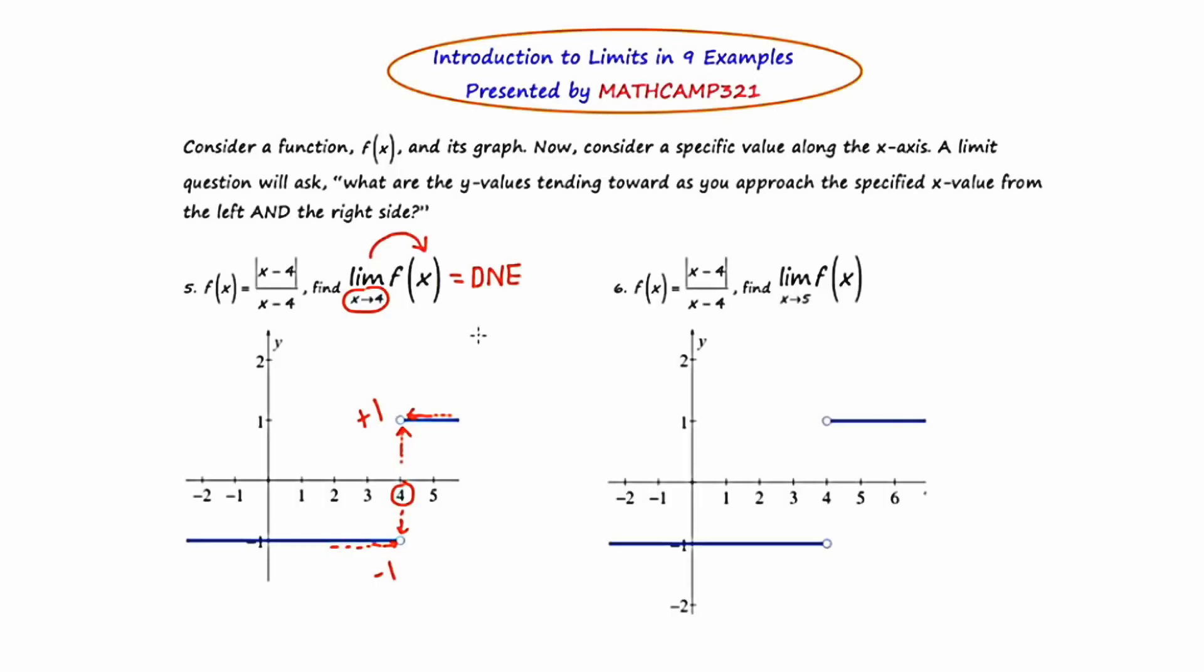And one of the reasons for a limit not existing is that the left-hand side value does not equal the right-hand side value. In this case, negative one does not equal positive one. But we're going to simply state left does not equal right, or L not equal to R.